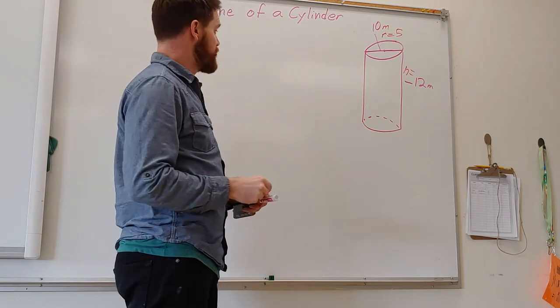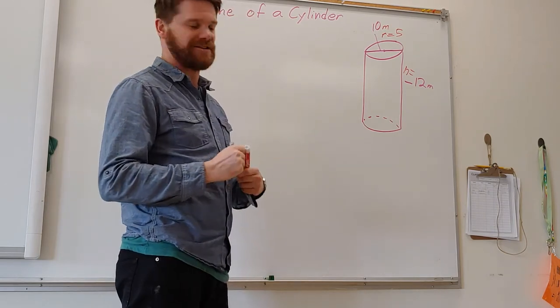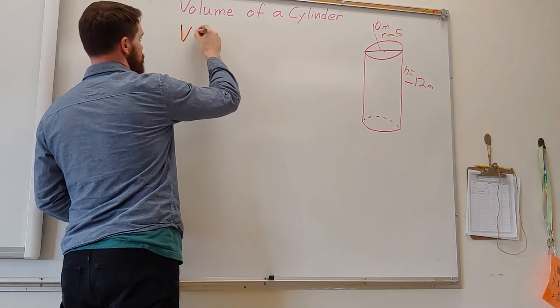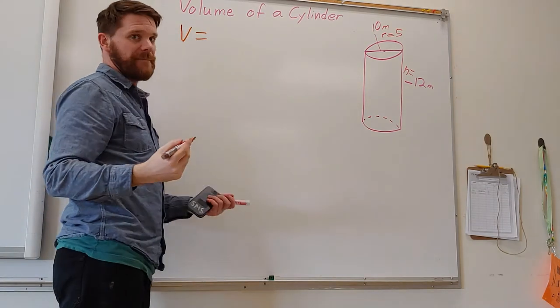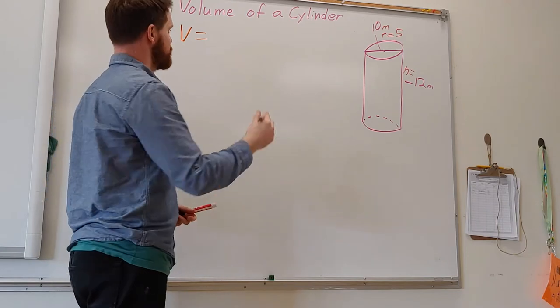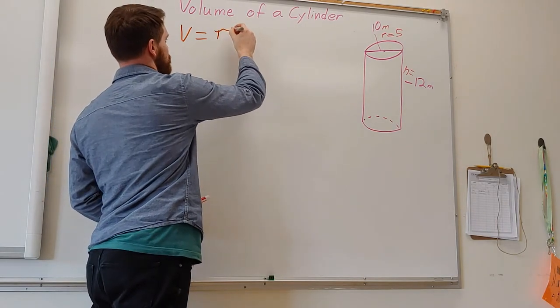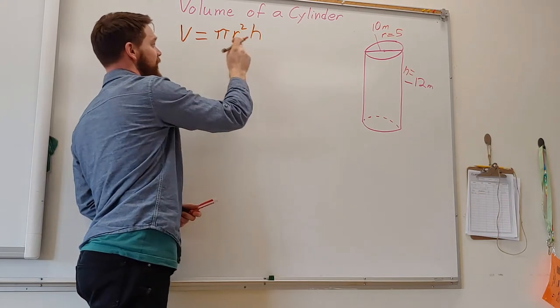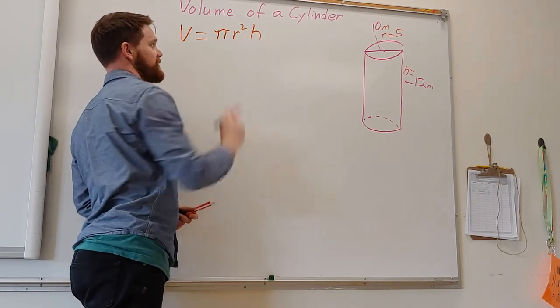So the equation, we always want to have a nice handy equation. So volume equals pi r squared times the height. Pi times the radius squared times the height.